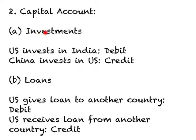As far as investments go, we are looking at foreign investments. From the US perspective, suppose the US decides to invest money in India. Because the US is paying India money, this foreign investment by the US in India will be considered a debit side entry into the US balance of payments account. On the other hand, if China invests money in the US, this will be a credit side entry into the US capital account, because the US is receiving money.